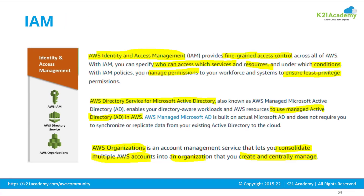AWS has a dedicated service called AWS IAM, which will help you implement authentication and authorization. We have AWS Directory Service, which is an identity and authentication service where you can migrate your on-premises directory to a directory on AWS, where you can store all your employee teams. And we have AWS Organizations, which is used when working with multiple accounts — it controls access across those accounts. These are the three major services that handle identity and access management effectively.